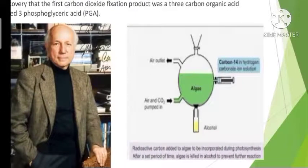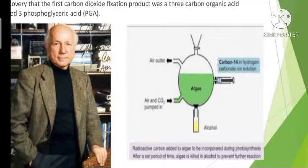This is the apparatus used by Calvin for his experiment. He took a suspension of Chlorella cells inside this apparatus. He injected carbon dioxide containing radioactive carbon into the apparatus and the Chlorella cells were illuminated. Within seconds, photosynthesis begins. Within seconds after the beginning of photosynthesis, he took some suspension of Chlorella cells and dropped it in hot methanol to kill it.